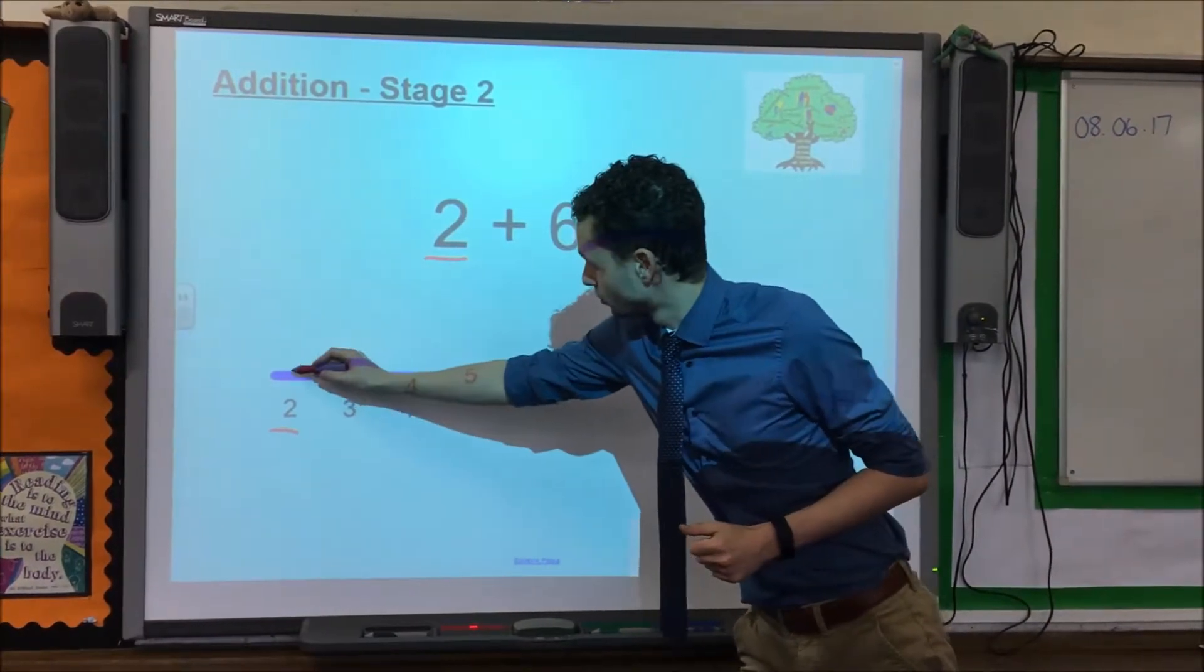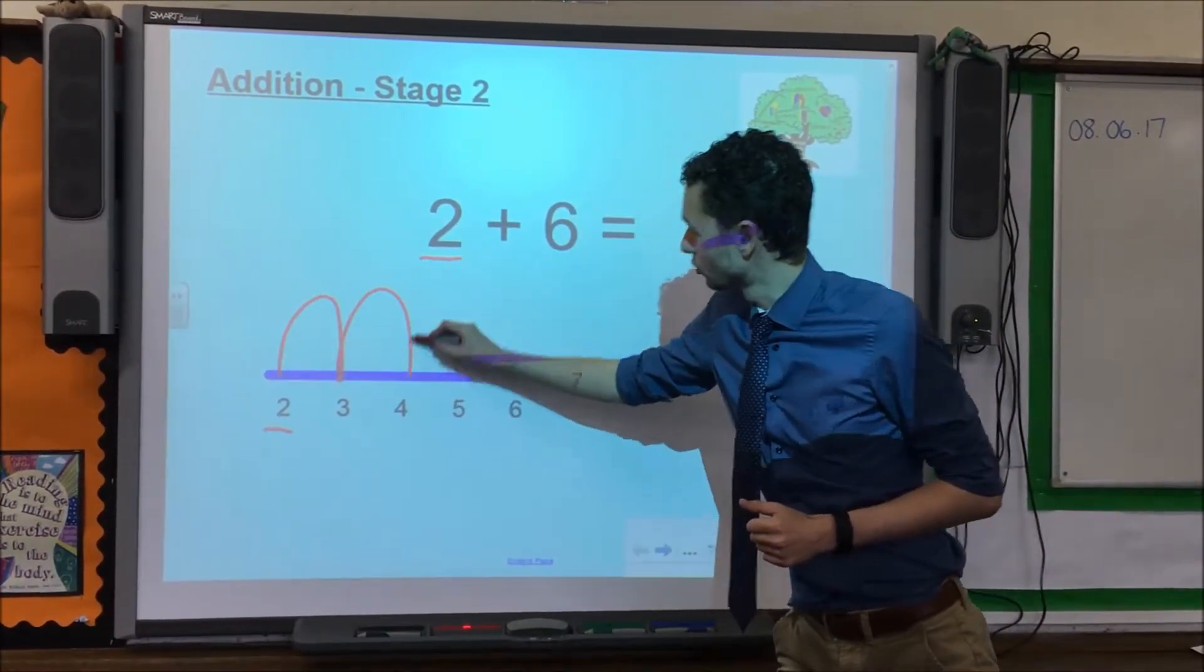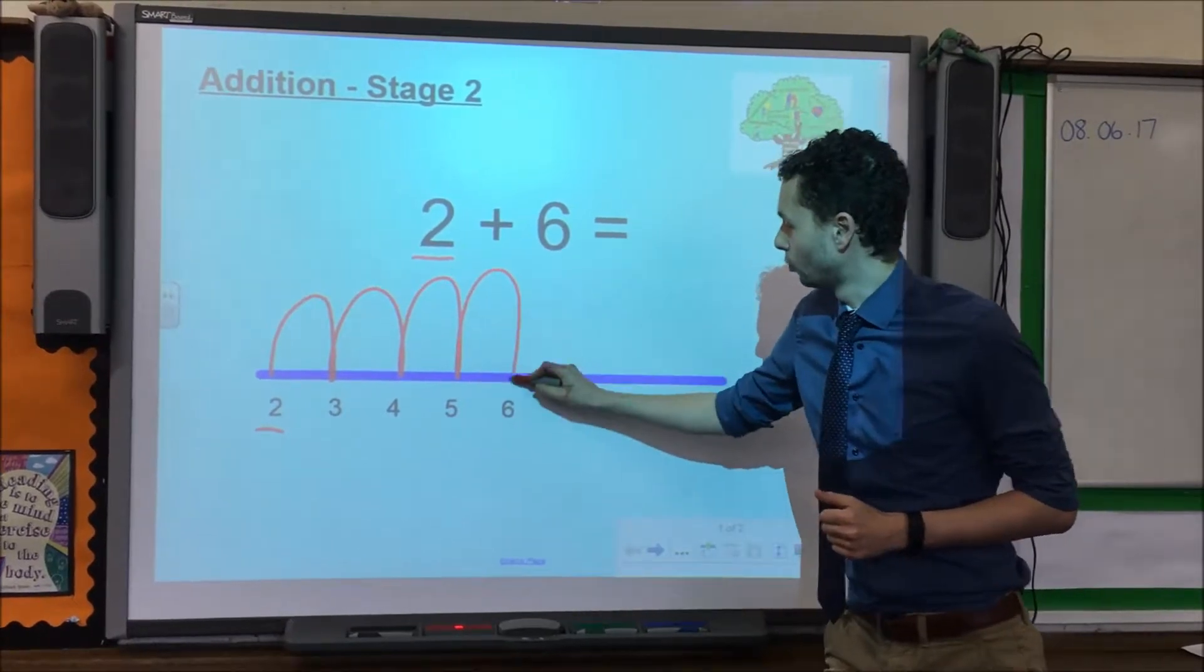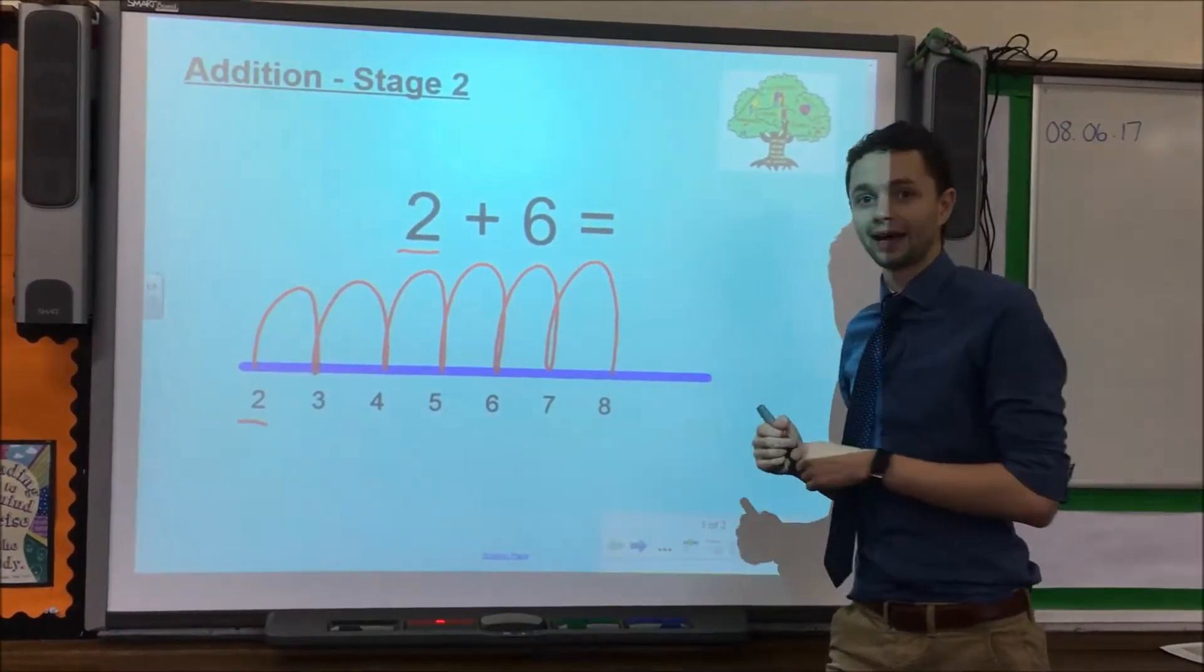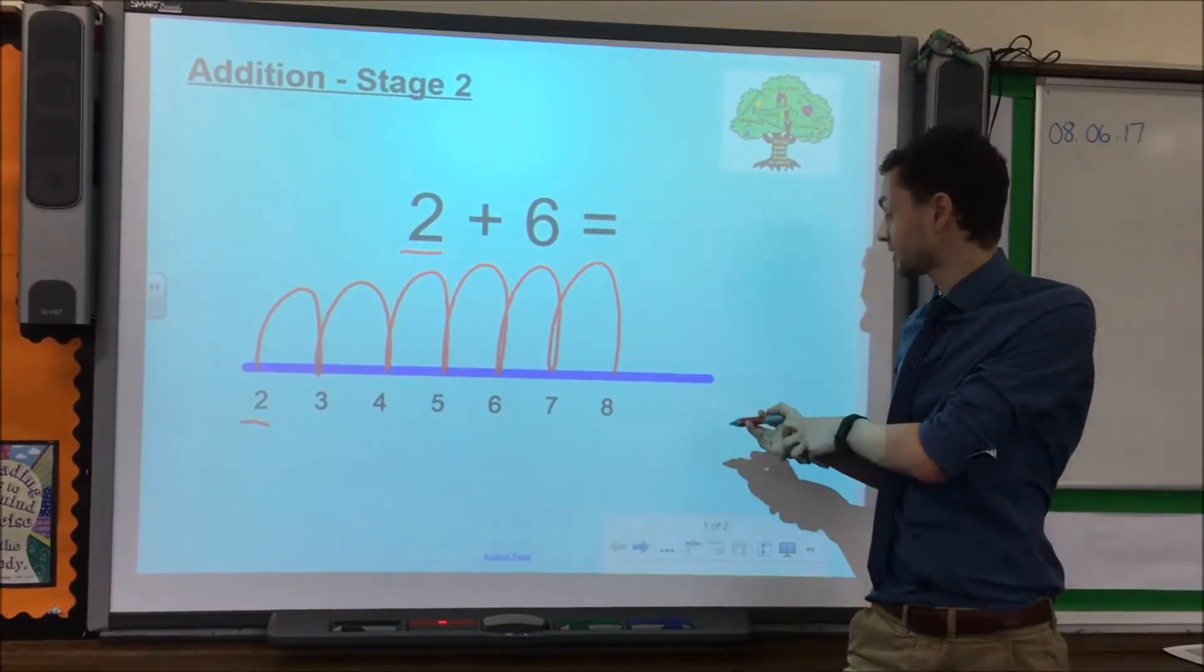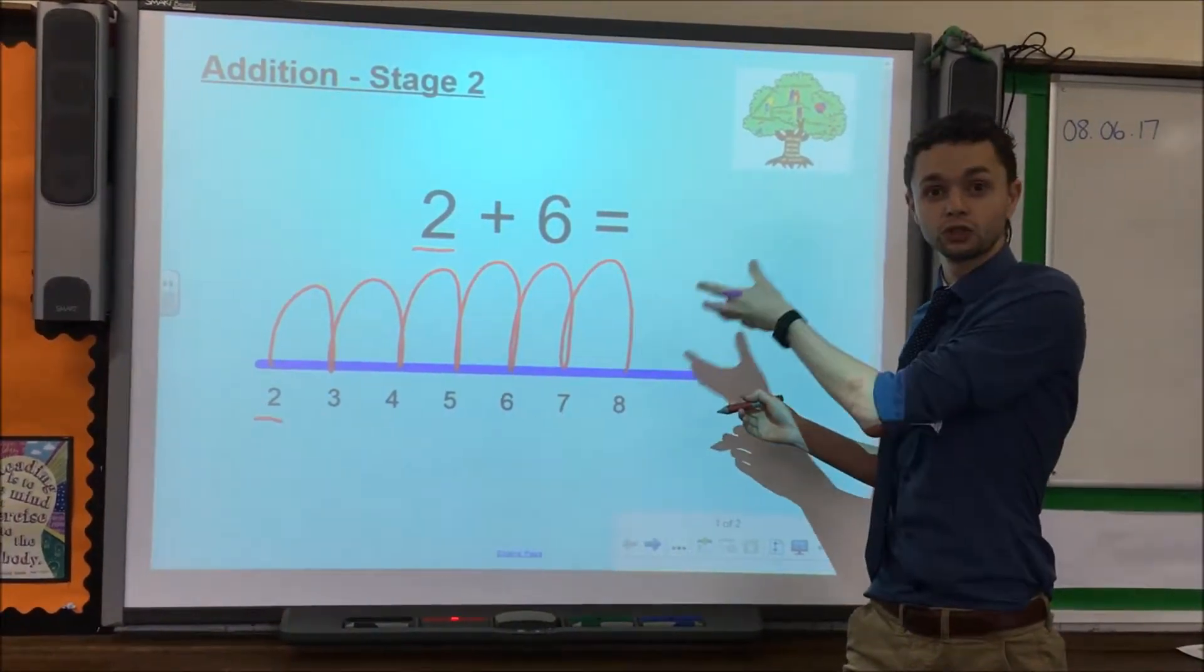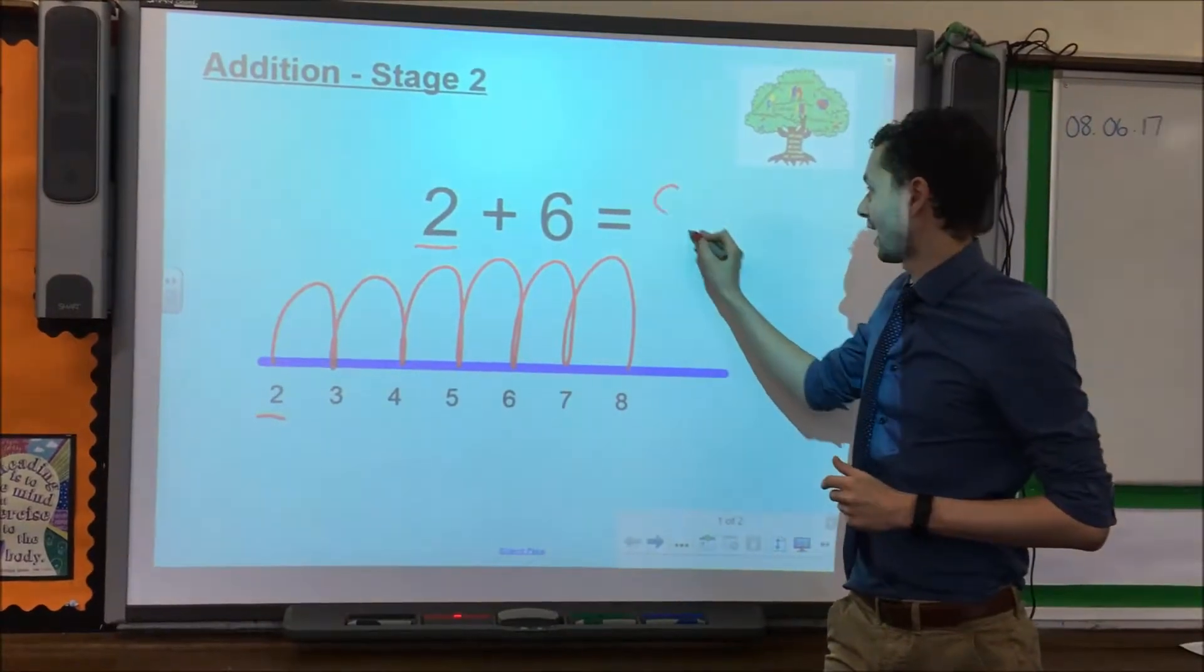So starting at the first number 2, we take 1 jump, 2 jumps, 3 jumps, 4 jumps, 5 jumps and 6 jumps. After we've made our 6 jumps we have reached the answer which we can see is 8. Therefore 2 add 6 equals 8.